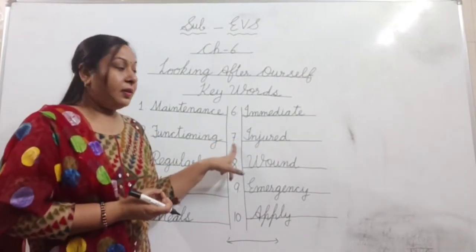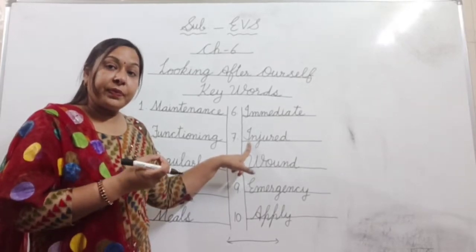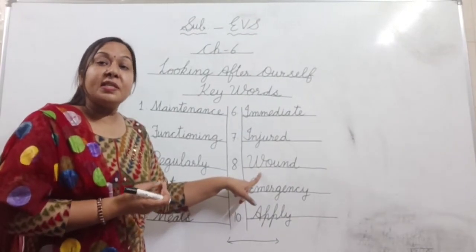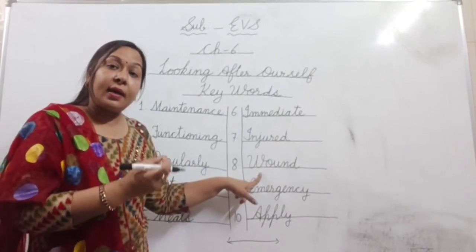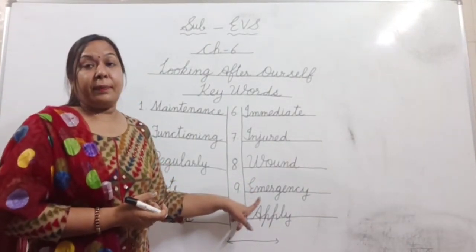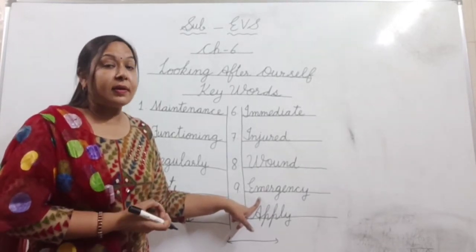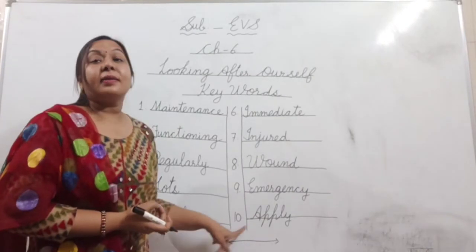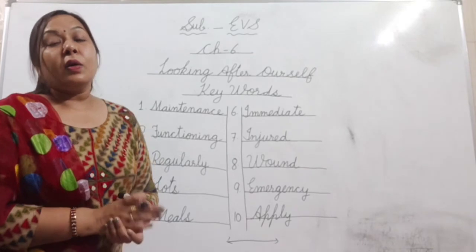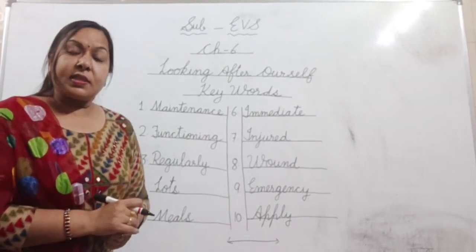Number seven — injured, means hurt or damaged. Number eight — wound, means injury on the skin or any cut on the skin. Number nine — emergency, means any accident or disaster. Number ten — apply, means to spread something or to put something on the skin. Thank you.